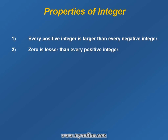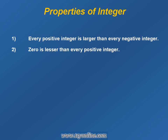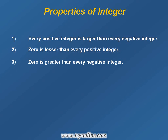According to the second property, 0 is lesser than every positive integer, or we can say that every positive integer is greater than 0. For example, 1, 5, and 11 are positive integers and hence they are greater than 0.